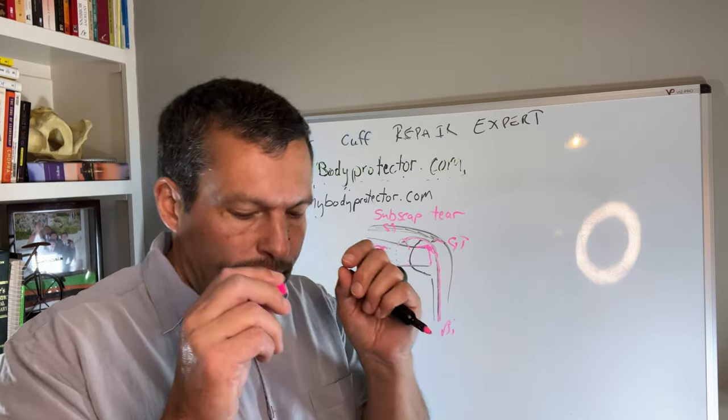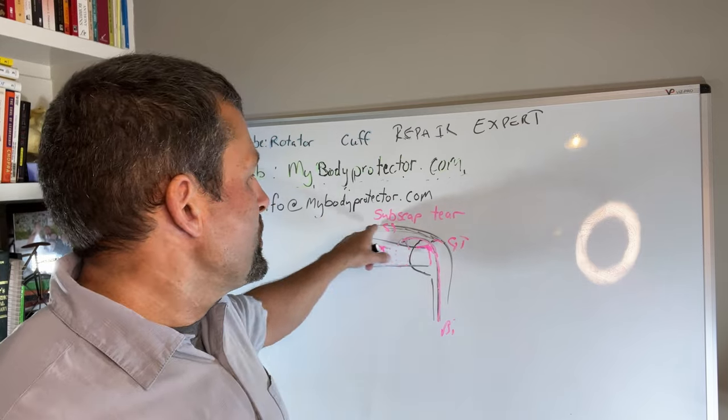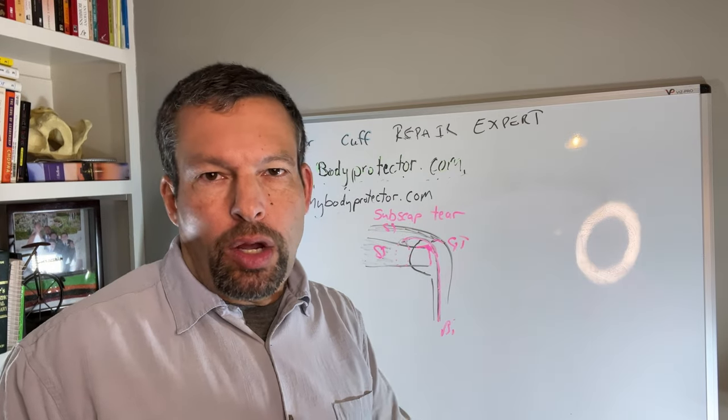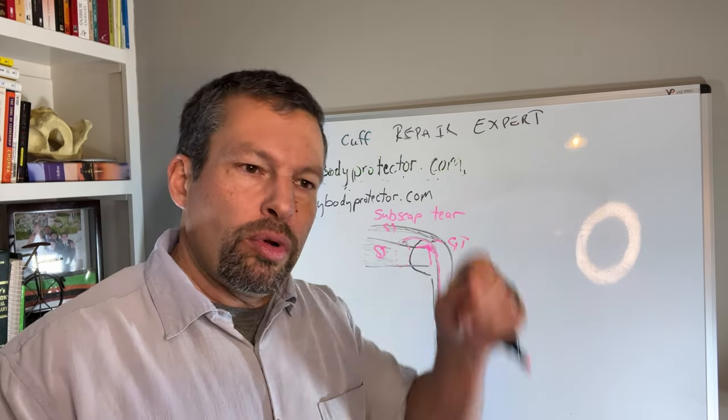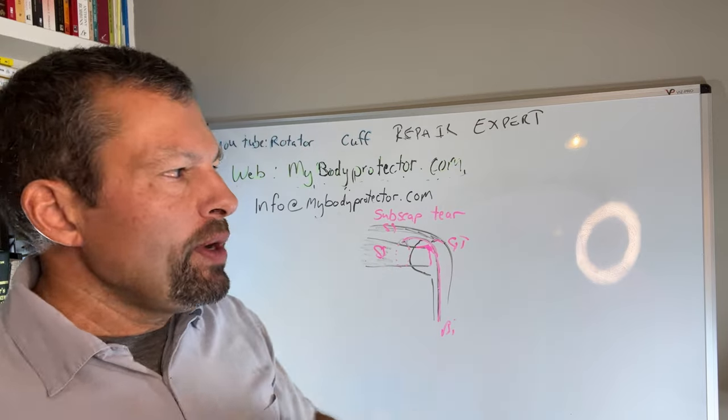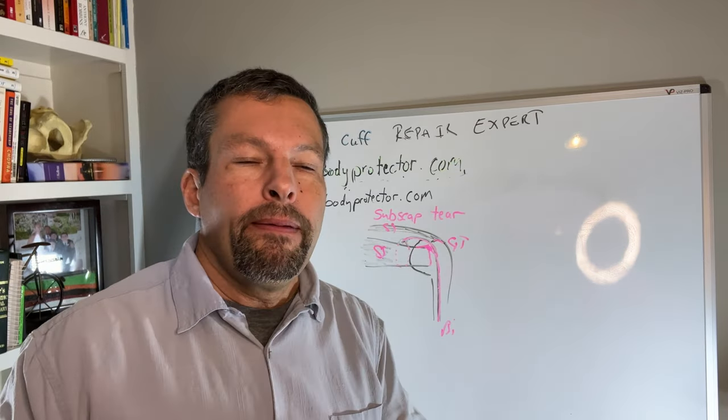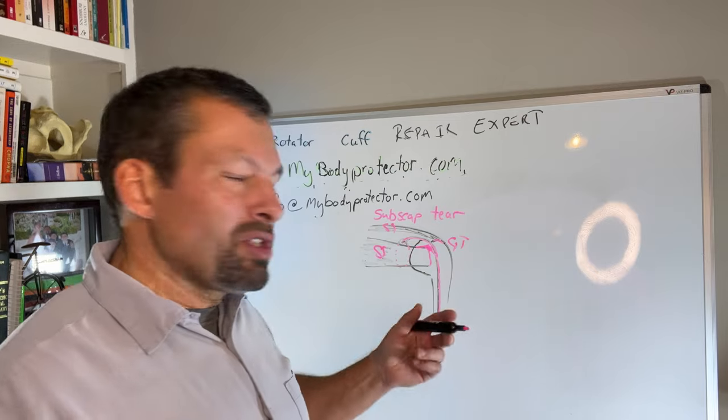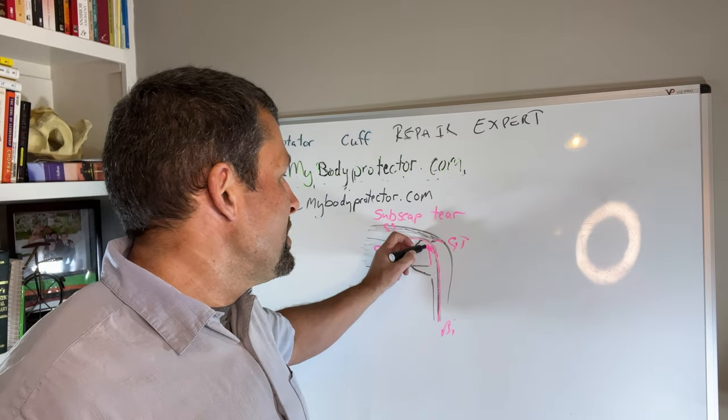So most of the time, if my predominant problem is a supraspinatus tear, I will do it almost always all arthroscopic through the little poke holes, anchors, that kind of stuff. If we have a very top of the subscapularis tear, then I'll fix that arthroscopically too. It's challenging, but you can see and you can get to it.